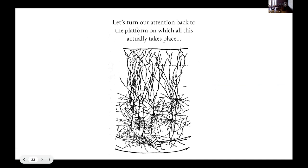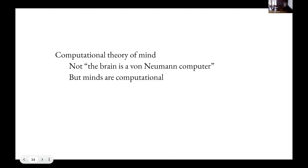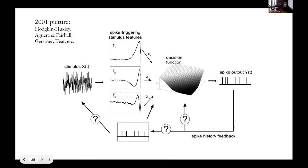So let's turn our attention back to the platform where all of this action is happening, the brains of horseshoe crabs or of ourselves. I don't think that the computational theory of mind is particularly controversial here in the room. Not that the brain is a von Neumann computer, right, to be clear. It's not, we're not executing instructions or doing logic in gates the way computers that we make do.